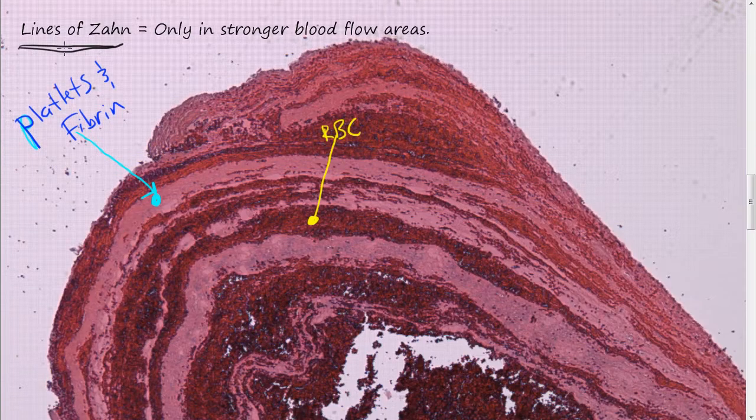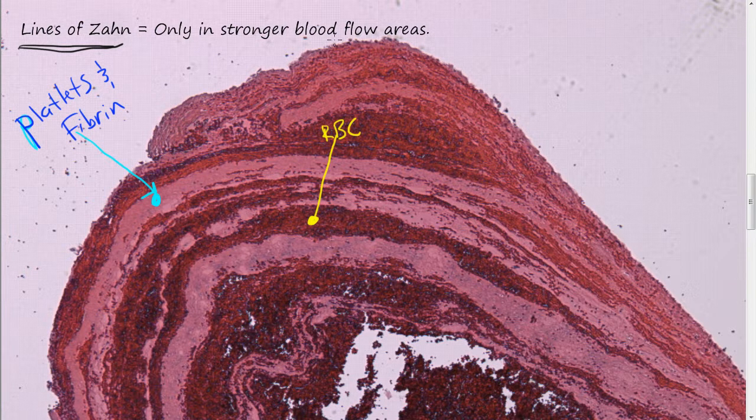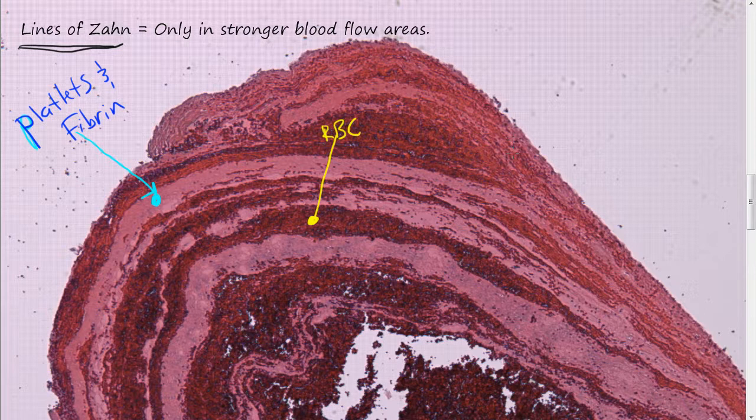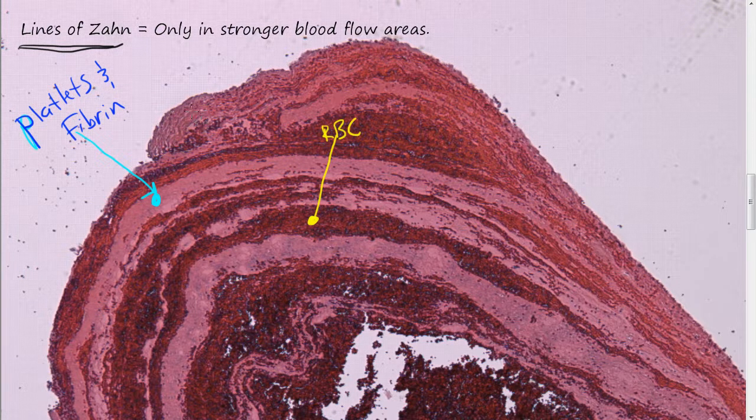Lines of Zahn. Lines of Zahn only occur in stronger blood flow areas. So in arteries, in high blood flow areas, there are these lines of Zahn. They do occur in slower moving blood flow areas, but they're not as prominent.